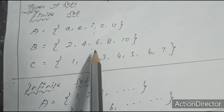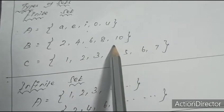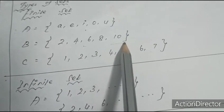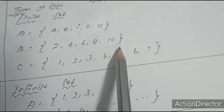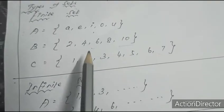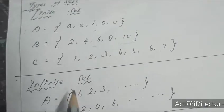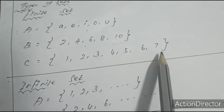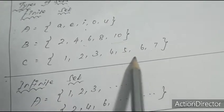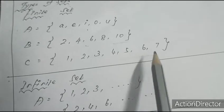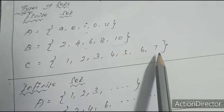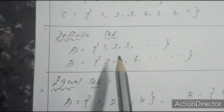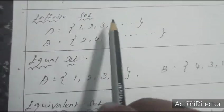B = {2, 4, 6, 8, 10} — the set of even numbers less than or equal to 10. It has a finite number of elements, so it is a finite set. C = {1, 2, 3, 4, 5, 6, 7} — the set of natural numbers less than 8. Next: infinite set.